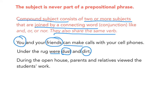Next: 'During the open house, parents and relatives viewed the student's work.' This sentence begins with a prepositional phrase, so we know that the subject is not 'during the open house.' Who viewed the student's work? It was 'parents and relatives,' and the verb that they share is 'viewed.'